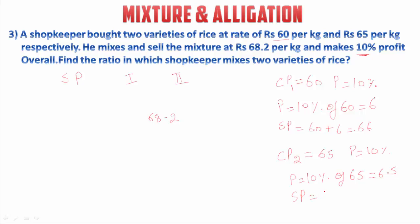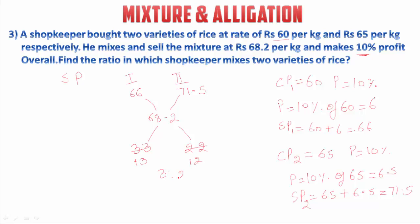Now applying alligation on selling prices: 71.5 − 68.2 = 3.3, and 68.2 − 66 = 2.2. Ratio = 3.3 : 2.2 = 3:2. So the answer is the same: the ratio is 3:2. You can use either method — cost price or selling price — both give the same result.